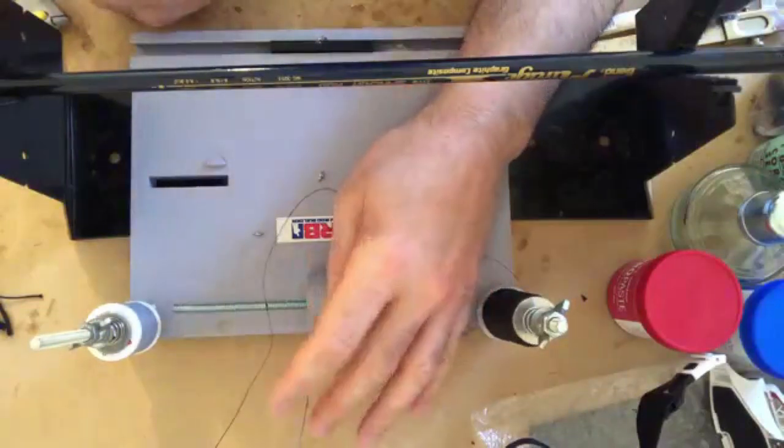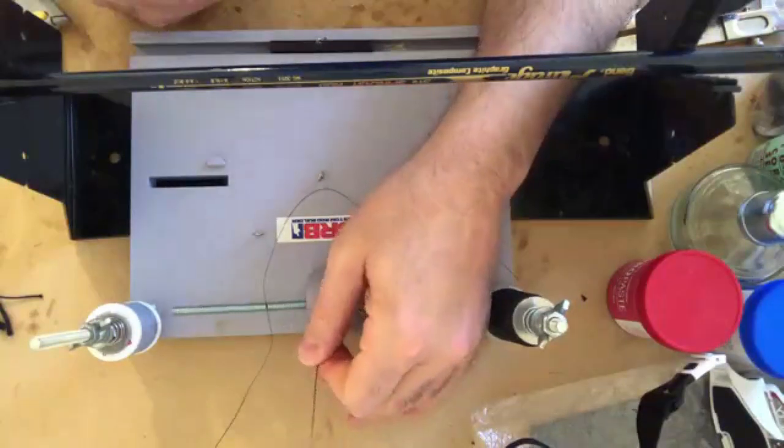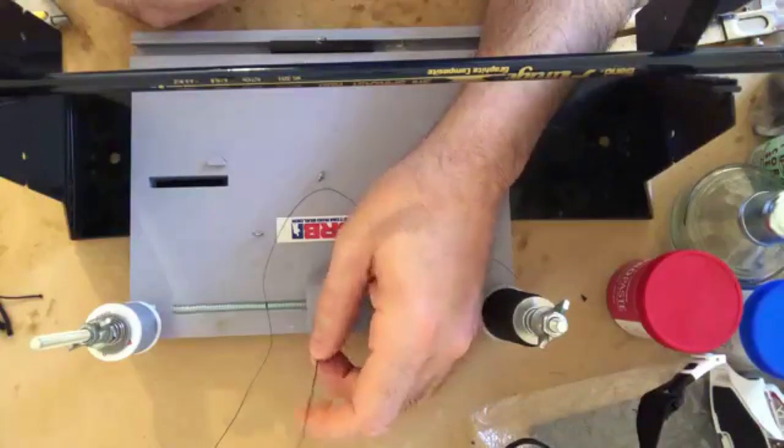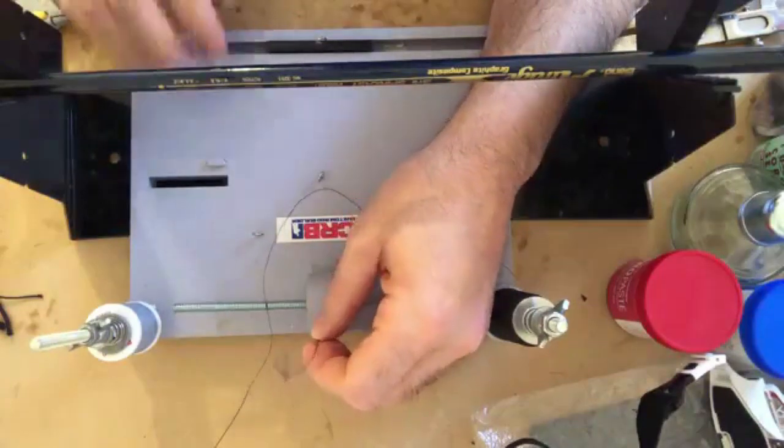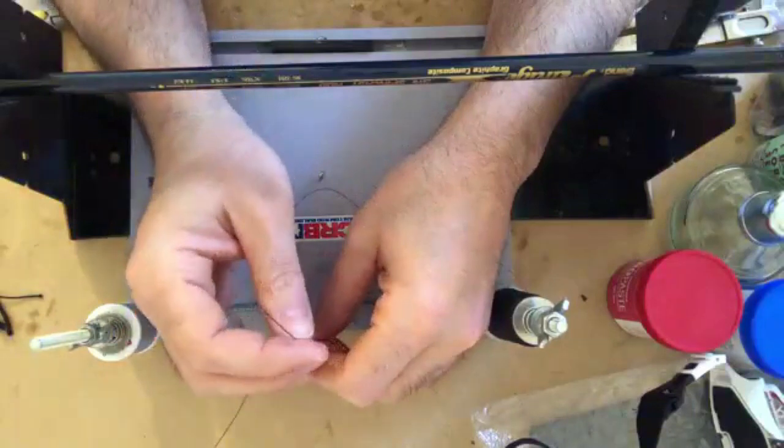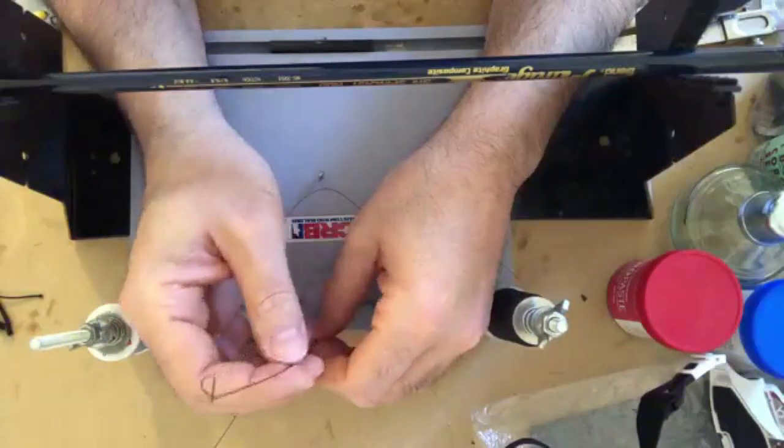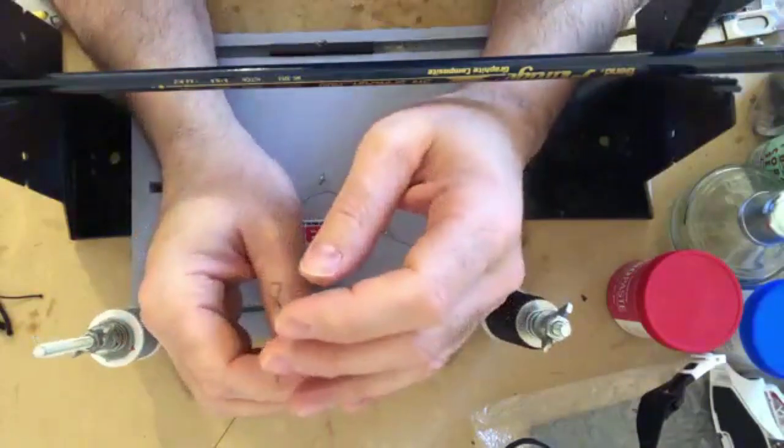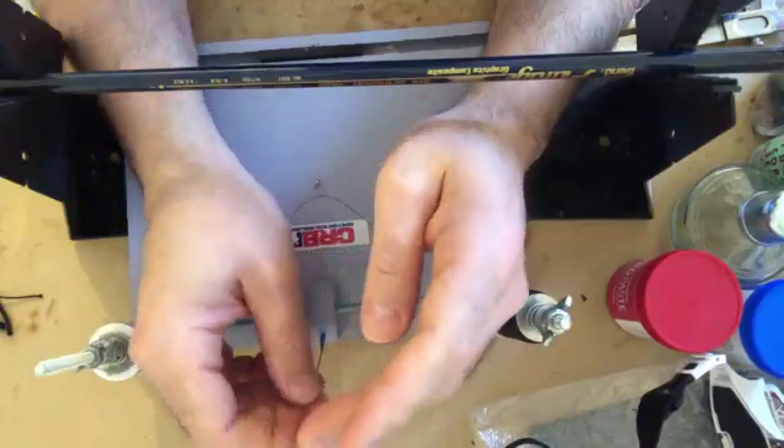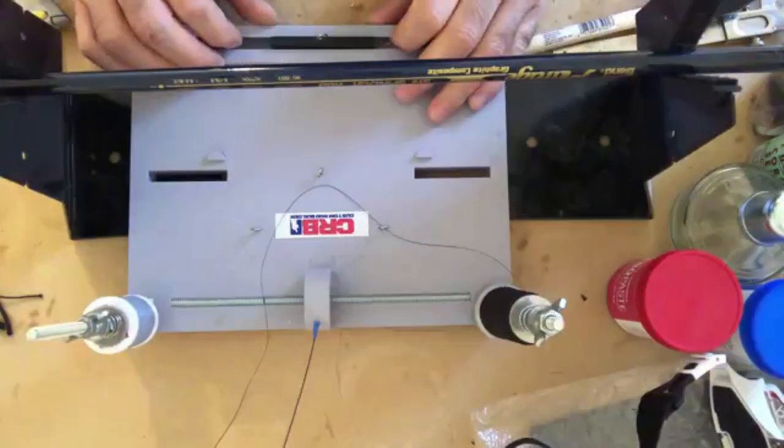I also don't have the normal tension rod that comes with it because it broke off, so I just switched that out with a piece of rigging wire that I normally use for saltwater fishing for bluefish and stuff. Just bend it up so you can thread it through there and that seems to work pretty good.